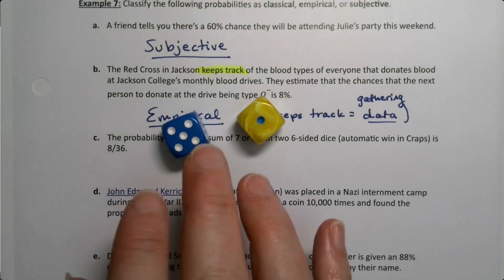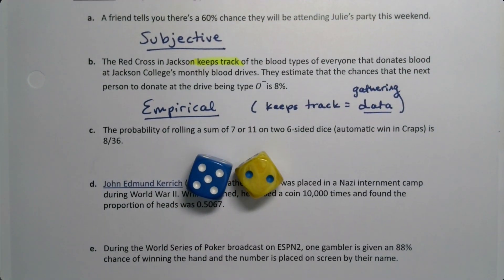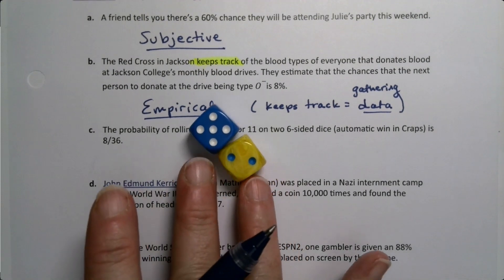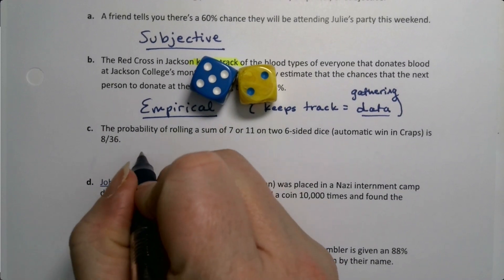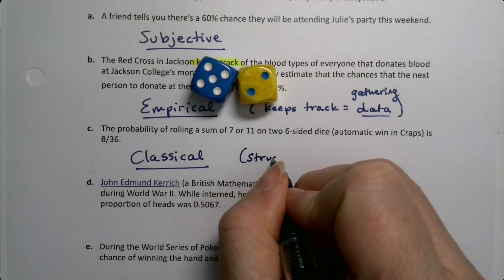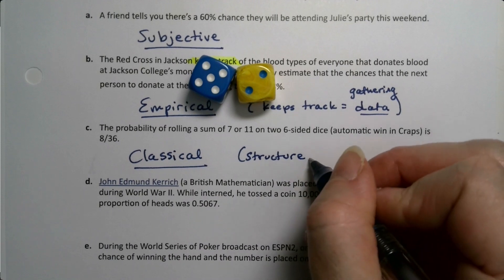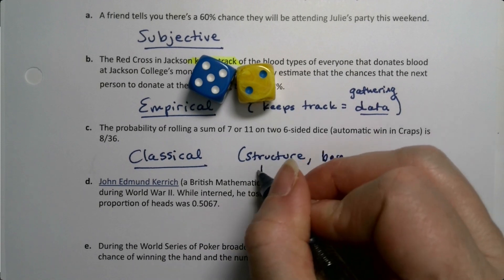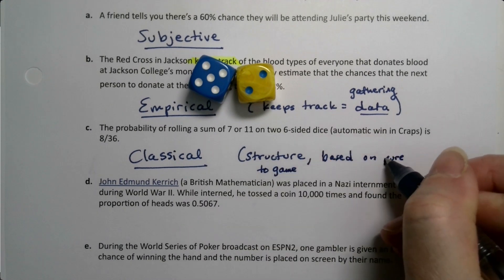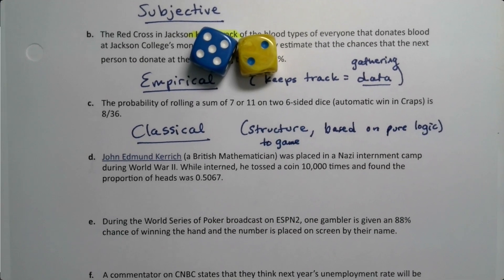The probability of rolling a sum of 7 or an 11, that means that the dice add up to 7 or 11. You didn't roll the dice. You're just kind of imagining it. So there's a structure to this because they're dice. So this is classical probability. There's structure. And honestly, games based on dice and cards and things like that, they're always classical. Structure to game. It's based on pure logic. You just kind of look at the dice and you can figure this out.